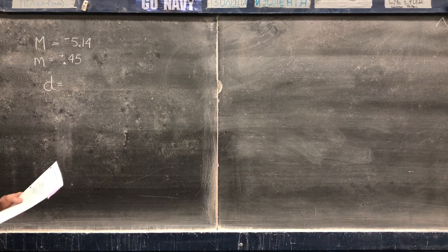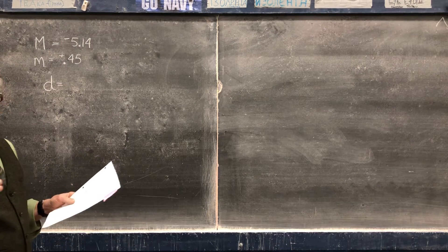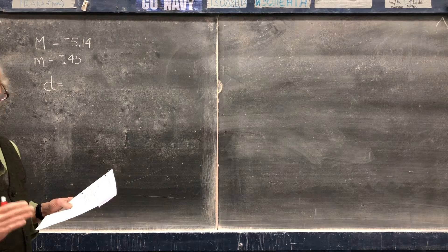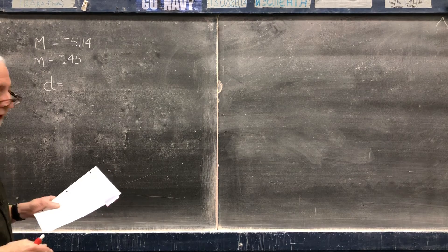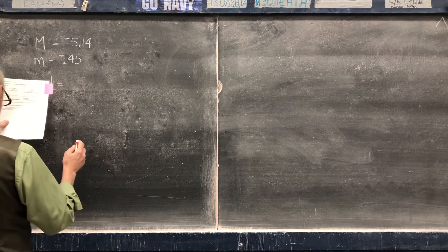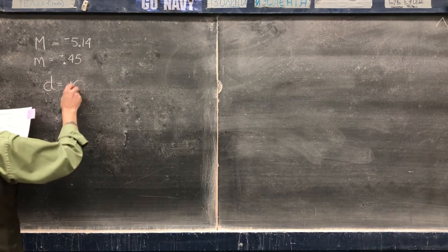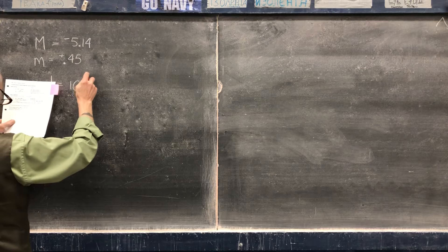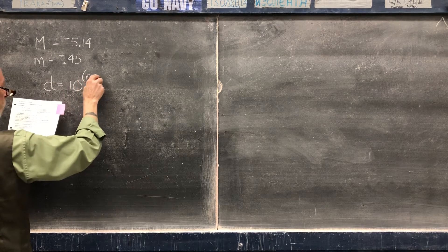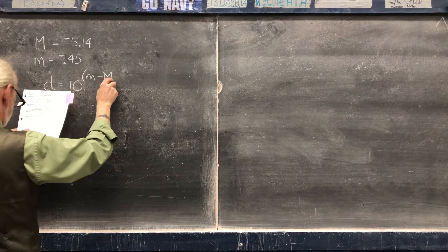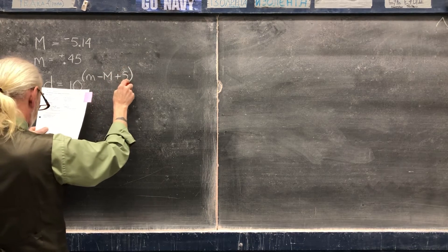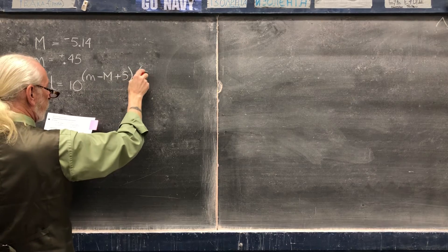And you'll find as we go along here that these aren't all that hard to manage after all. It's pretty much pick the formula and just plug in the numbers and let it rip. We call it plug and chug. All right, so our distance formula is going to be 10 to the (m minus M plus 5) divided by 5.